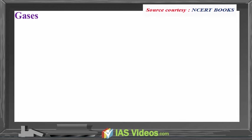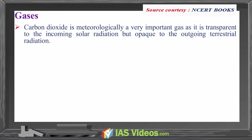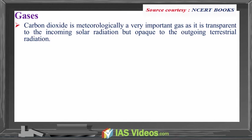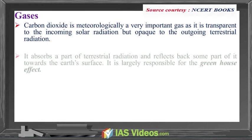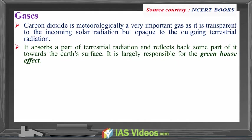Carbon dioxide is meteorologically a very important gas as it is transparent to the incoming solar radiation but opaque to the outgoing terrestrial radiations. It absorbs a part of terrestrial radiation and reflects back some part of it towards the earth's surface. It is largely responsible for the greenhouse effect.